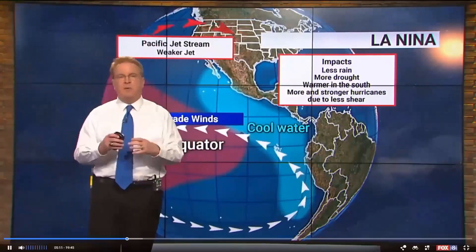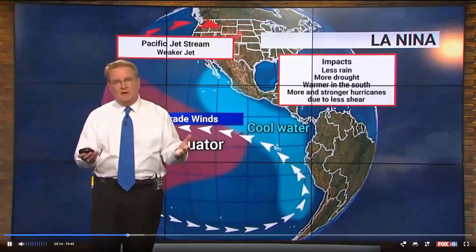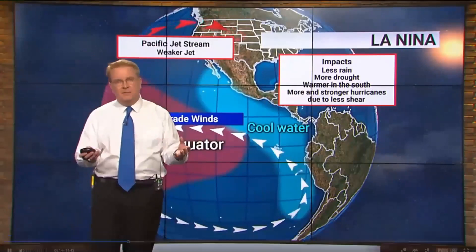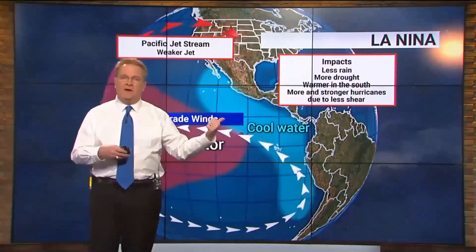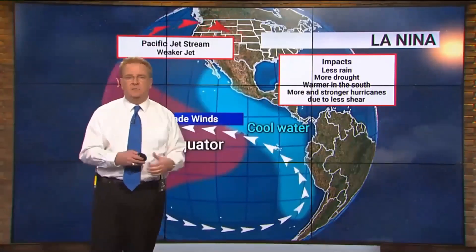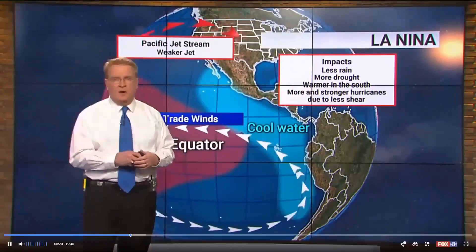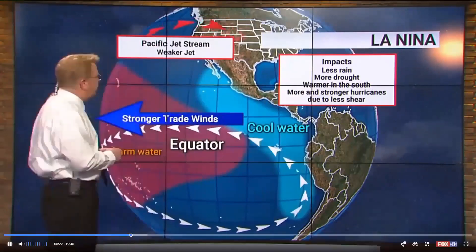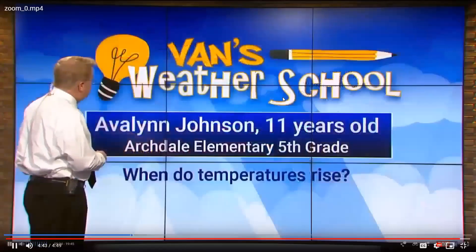Forecasting daily weather patterns, we only go about seven to ten days out most of the time. But we can use global patterns like El Niño and La Niña to give us an idea of what we can expect many months into the future. That's why we understand and study El Niño and La Niña.